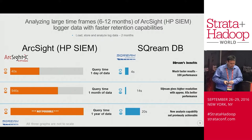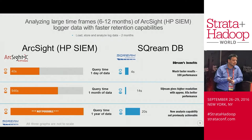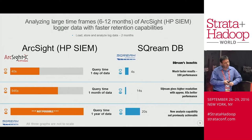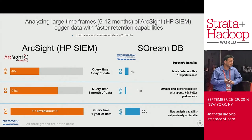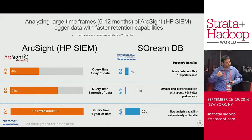Together with SQream, they could search much faster — 10x, even 100x faster queries. They could search all the events of all users of this organization for the last year in less than half a minute. This was not possible before, and it enabled them to find many more cyber threats than they used to.